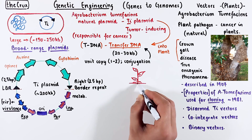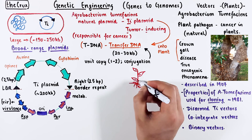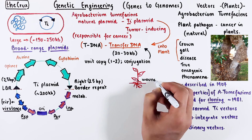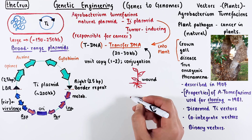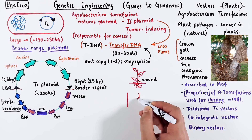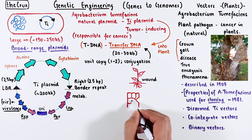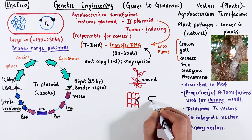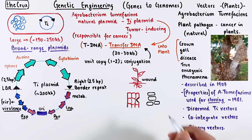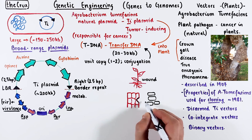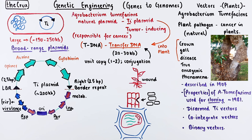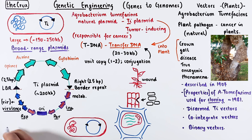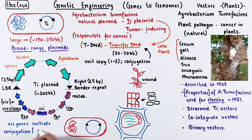Here is Noodle, a happy little dicot. One unlucky day, Noodle got an ouchie. The site of the bruise produces acetyl syringone, which is like a pheromone to the agrobacterium. This unintentional mating call by the plant is the first step to cancer. When agrobacterium is next to the plant cell, the virulence proteins initiate conjugation, where the T-DNA is transferred.